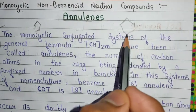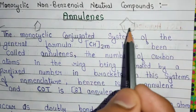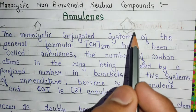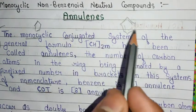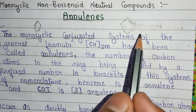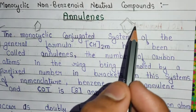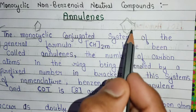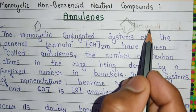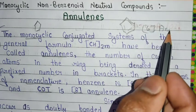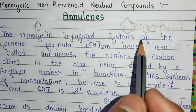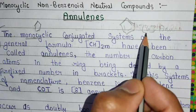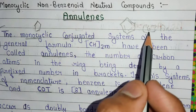So basically this is the normal structure of benzene. In the nomenclature of annulin it depends on the number of carbons present in the ring. In this benzene ring there are 6 carbons present, that's why its name is [6]annulin. So basically the name of annulin depends on the number of carbons present in the compound. In this compound 6 carbons are present, so its name is [6]annulin.